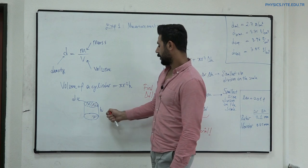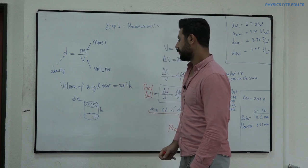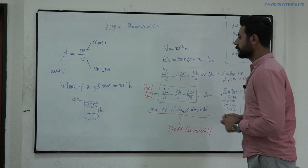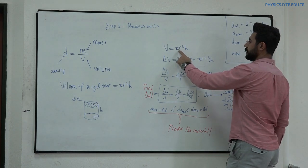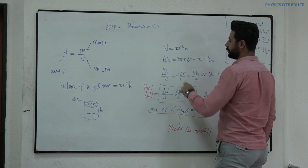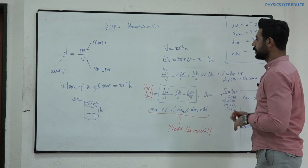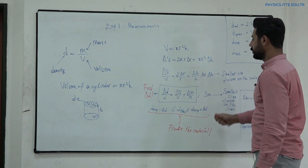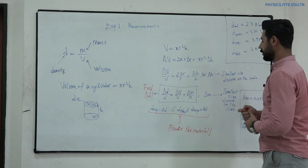Here H is the height of the cylinder and R is the radius of the upper or lower disk. As given, the volume of the cylinder is π R squared H. If we derive this equation, we get the following expression. And if we divide this equation by the volume of the cylinder, we have the equation as given here.